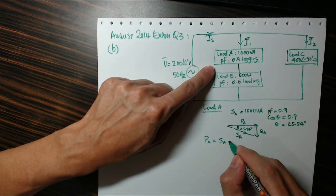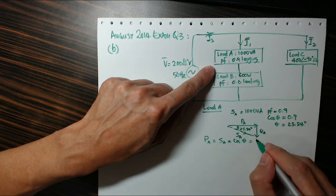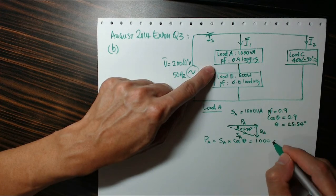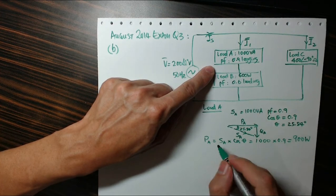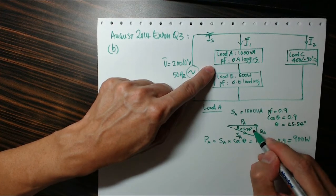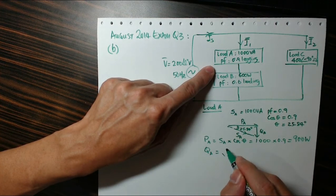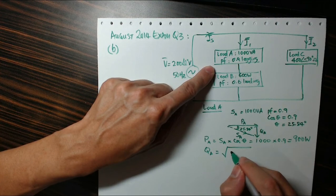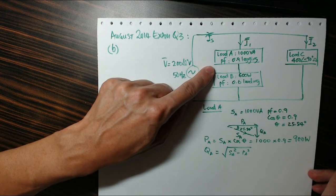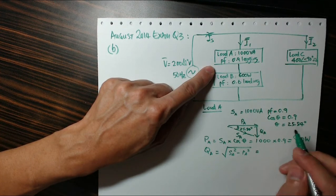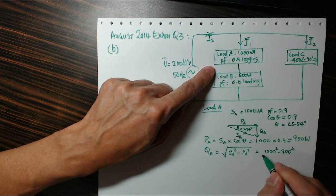Now we can calculate PA very quickly. Directly, PA, the real power, is just the apparent power times the power factor cos theta. So that's 1000 VA multiplied by 0.9, so it's 900 watts. Now if you know this, if you look at this is the right angle triangle, so I can use Pythagorean theorem to calculate.